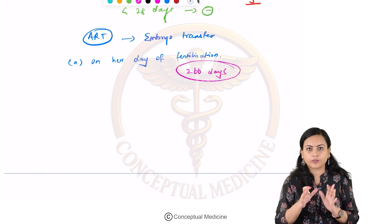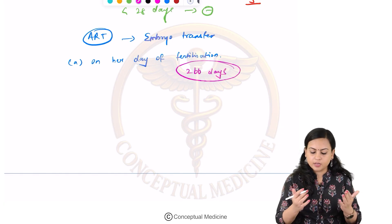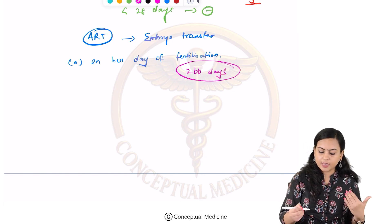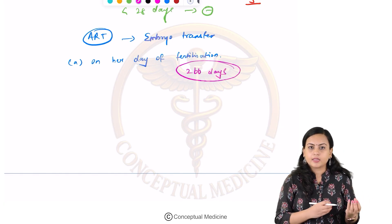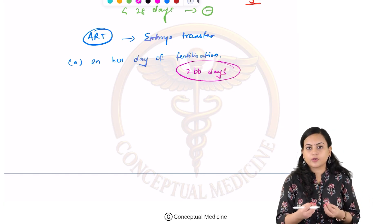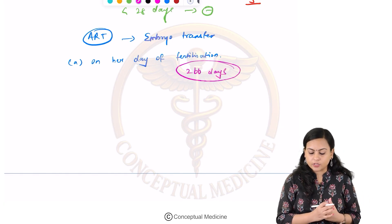So this number — 266 days — is what we take for embryo transfer done on the day of fertilization.